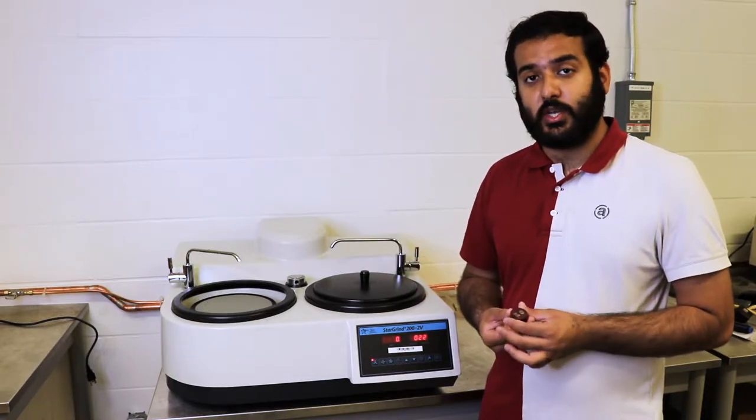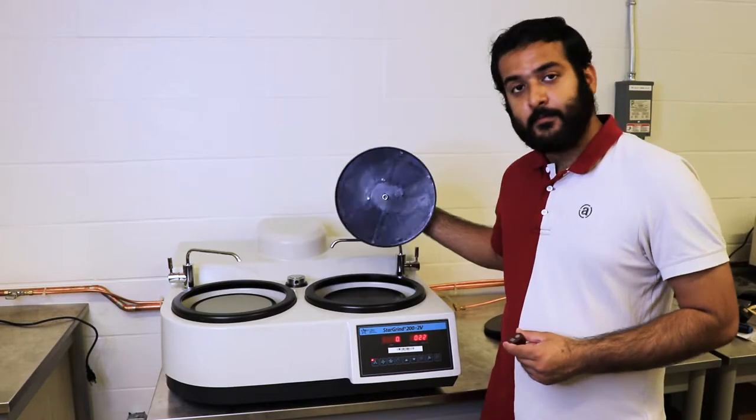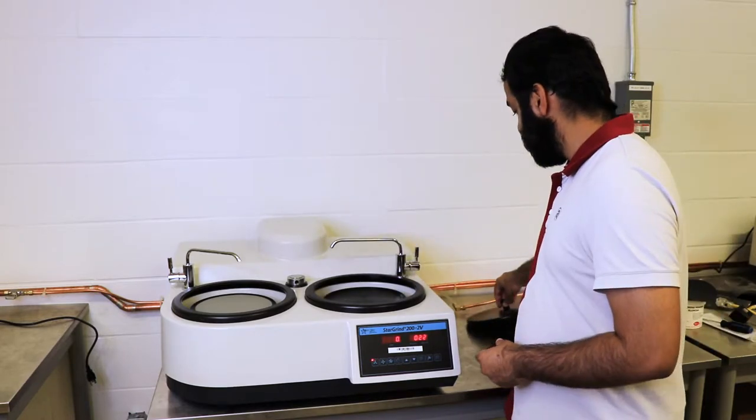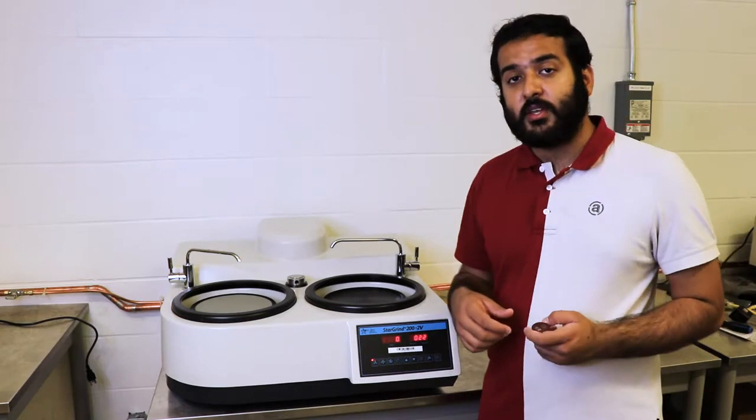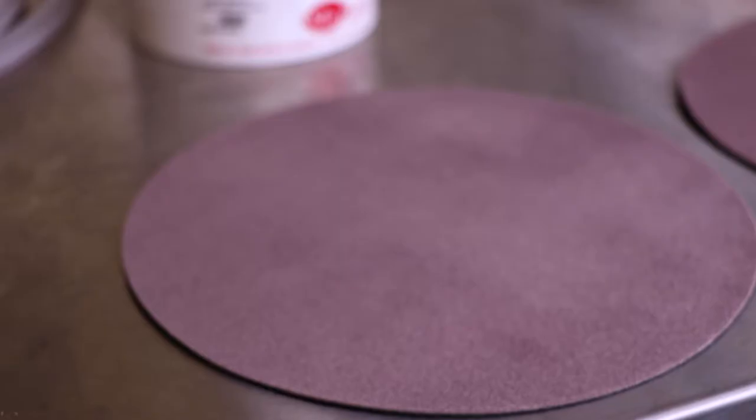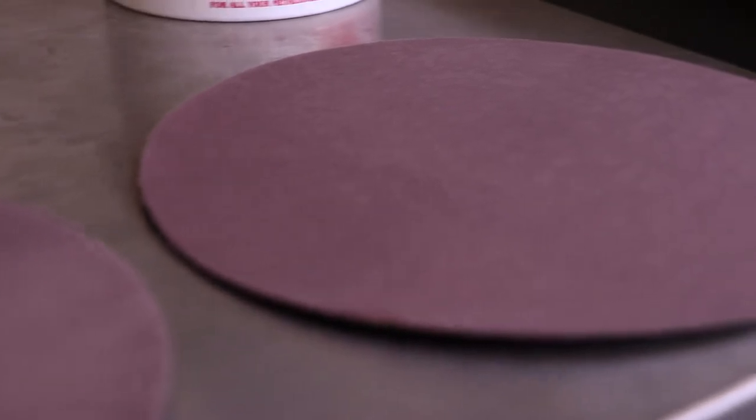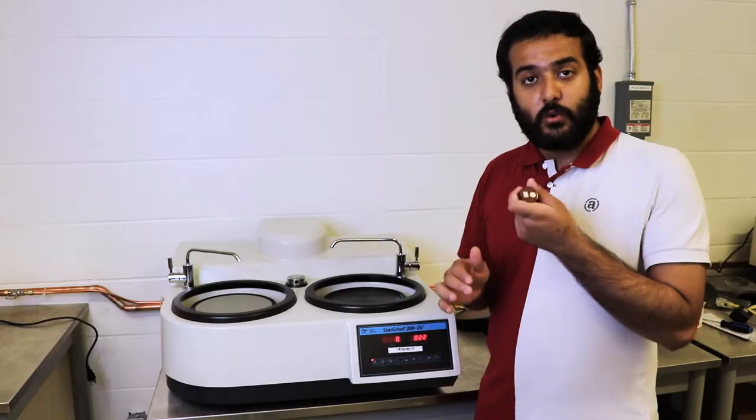Now that we're done grinding our sample, we can move on to polishing it. We're going to use the other head of the machine. I'm going to use a polishing pad instead of sandpaper. A polishing pad is basically a fabric in which we apply powder and liquid to make a paste that can more finely grind the surface of your sample.